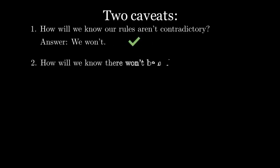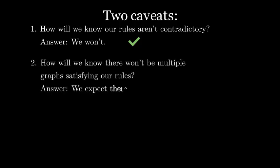Second, how do we know there won't be multiple graphs which satisfy all the rules? Actually, we expect there to be lots of graphs that could work, but they'll be similar enough that the differences won't really matter much for our purposes.